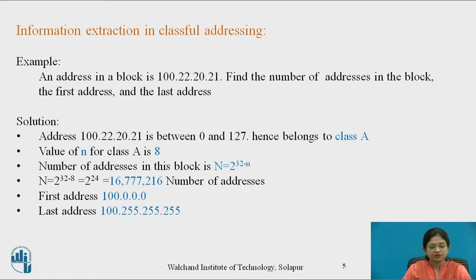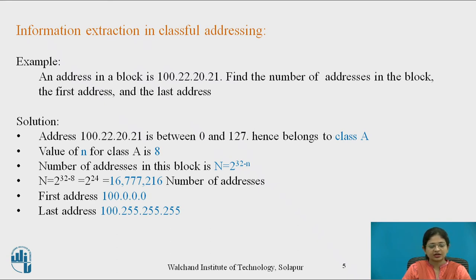So for this given address, the number of addresses is more than 16 lakhs. The first address is found by keeping the network ID as-is and setting the rightmost bits to 0s. Therefore, the first address is 100.0.0.0 and the last address is 100.255.255.255.